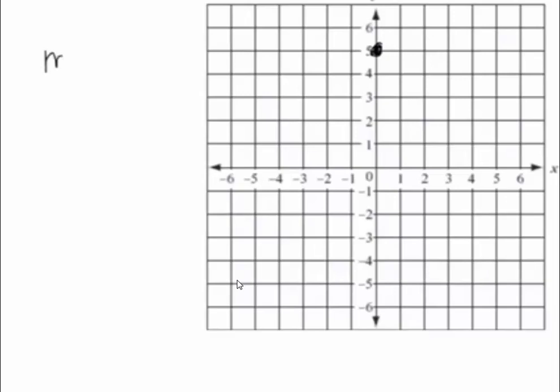Now, since m is negative 3, that would be our rise over run. And since the 3 doesn't have any number under it, you always put a 1 if there is no number.